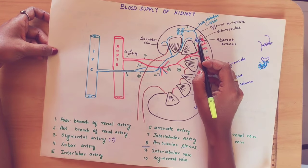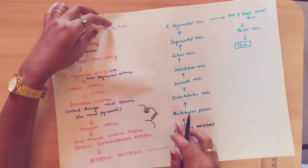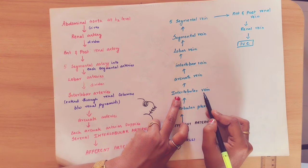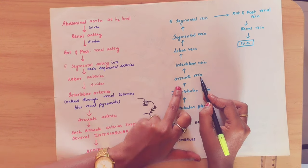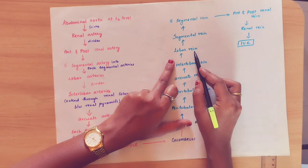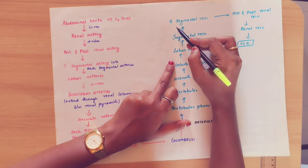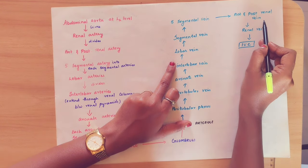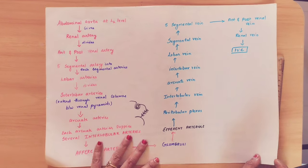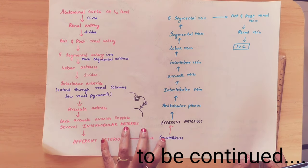The peritubular plexus drains into the interlobular vein, then into the arcuate vein, then the interlobar vein, then lobar vein, then segmental vein. These five segmental veins drain into the anterior and posterior branches of the renal vein, then into the renal vein, and finally into the inferior vena cava. This is how the blood supply of the kidney works.